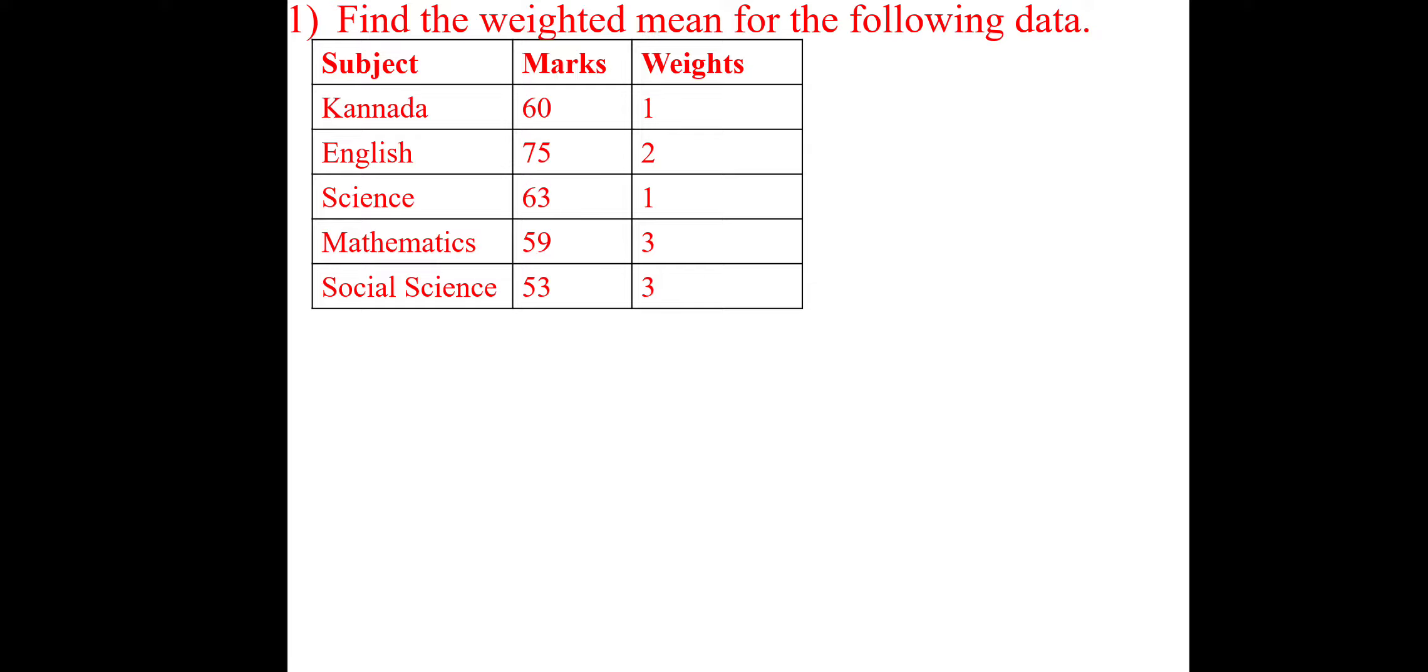Subject marks weight. Subject is Kannada, English, Science, Mathematics, Social Science. Values are 60, 75, 63, 59, 53. Weightage will be given: Kannada will be 1, English will be 2, Science will be 1, Mathematics will be 3, Social Science will be 3. So, this is one of the examples I have taken.